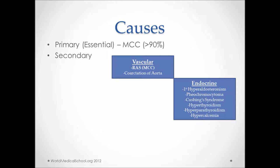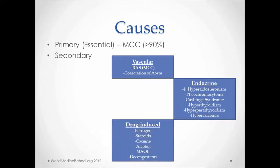Some drug-induced causes of hypertension: Estrogen is a common cause in young females who are on birth control pills. Steroids are seen in young male athletes. Cocaine can also be seen in young adults who present with chest pain due to cocaine-induced vasospasm. Alcohol is also a significant cause. MAOIs — monoamine oxidase inhibitors like phenelzine and selegiline — when used in combination with other antidepressants, may lead to hypertensive crisis. Decongestants can cause increased blood pressure due to anticholinergic effects. Renal problems like glomerulonephritis, pyelonephritis, and polycystic kidney disease can also cause hypertension.